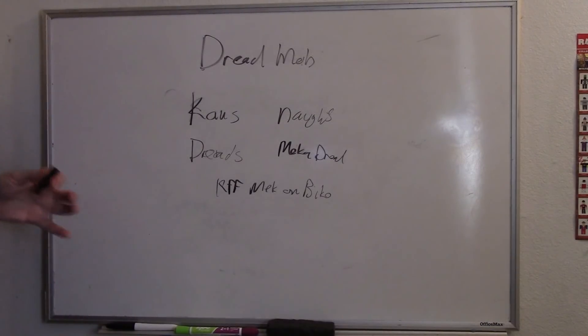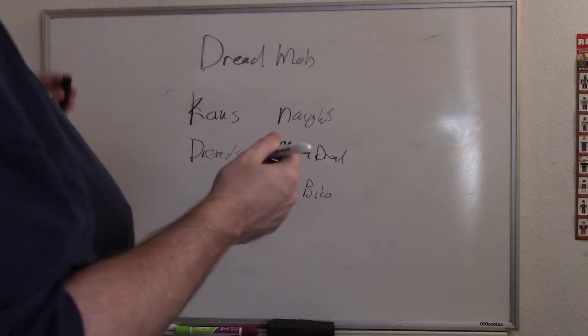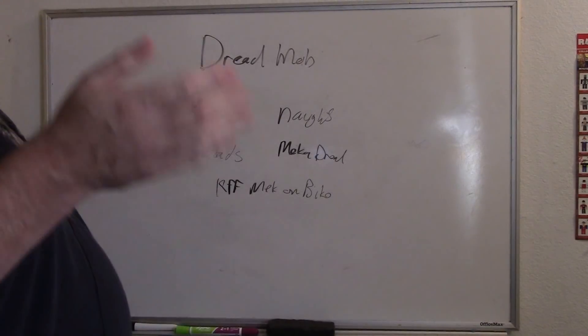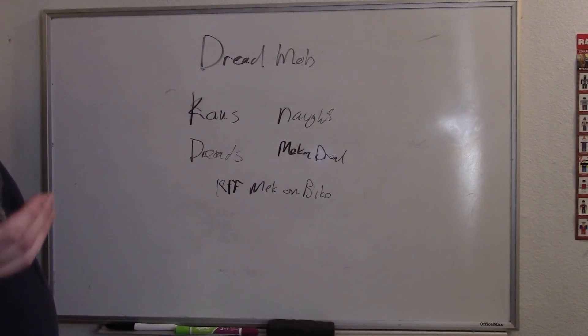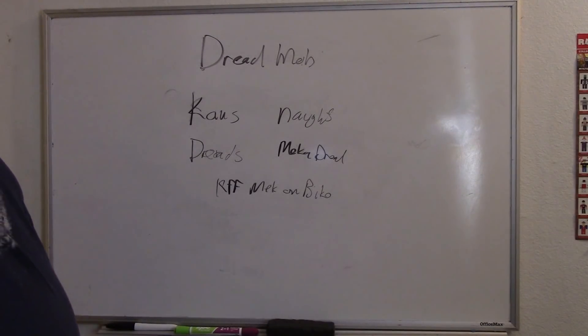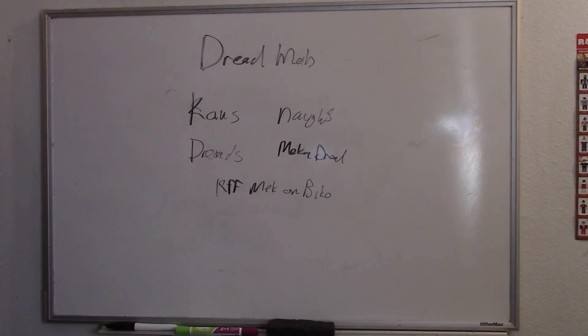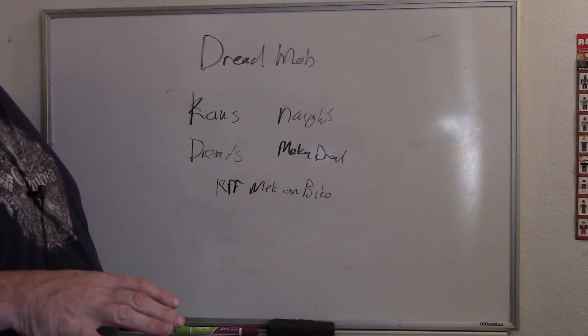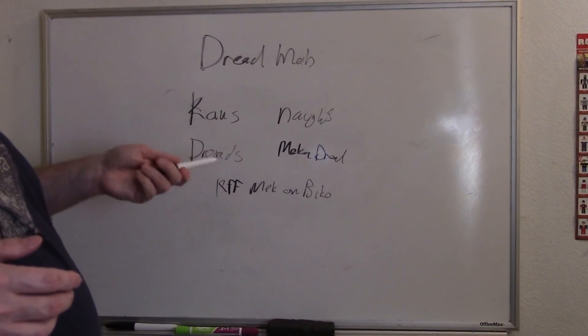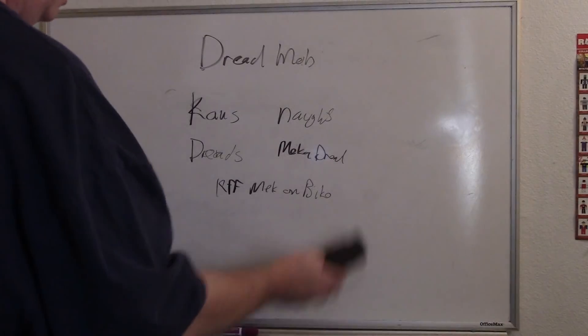Those are your primary units when running a dread mob. You can easily build an entire list of nothing but walkers and that's a lot of fun. Dread mob is very good against certain armies. It's going to be a challenge because most armies can bring a good mix of anti-infantry and anti-tank shooting. But with a dread mob if you only bring walkers their infantry shooting is not going to be that effective especially against cans. There's not a lot of tactical flexibility in the dread mob but there's decent shooting especially if you can support these things with vehicles like the kill tank and the big track.